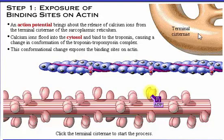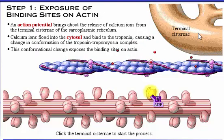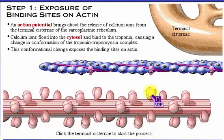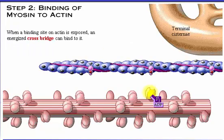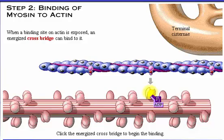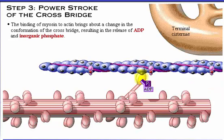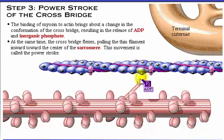When a binding site on actin is exposed, an energized crossbridge can bind to it. Click the energized crossbridge to begin the binding. The binding of myosin to actin brings about a change in the conformation of the crossbridge, resulting in the release of ADP and inorganic phosphate. At the same time, the crossbridge flexes, pulling the thin filament inward toward the center of the sarcomere. This movement is called the power stroke. The chemical energy of ATP has been transformed into the mechanical energy of a muscle cell contraction.